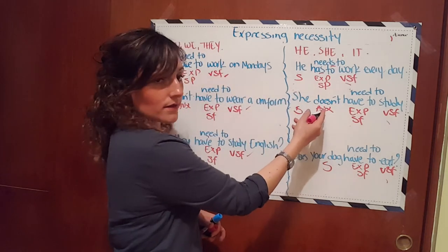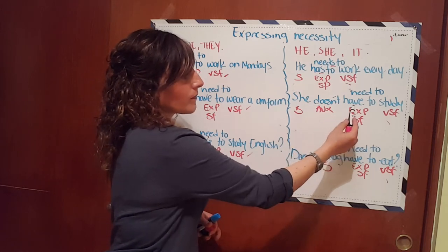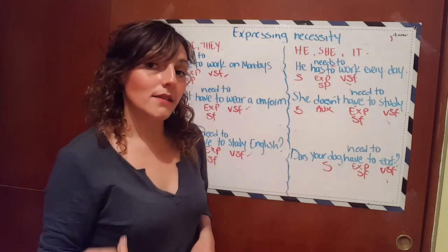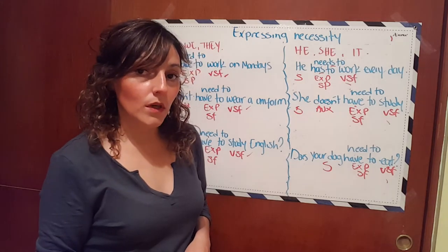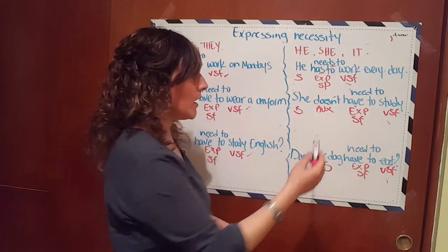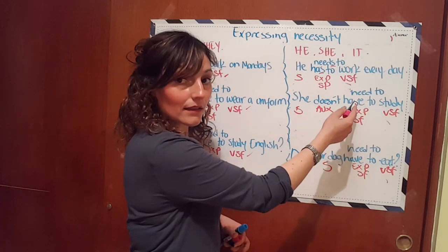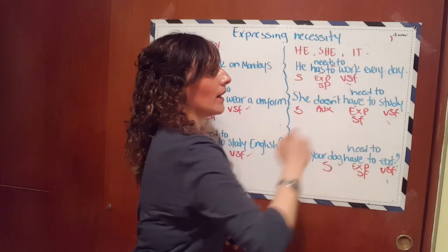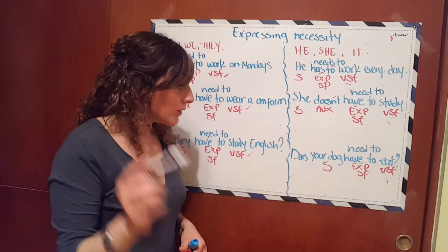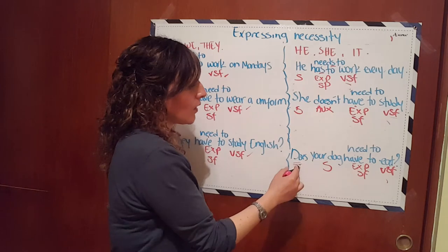For the negative form with he, she, it in present, the auxiliary is 'doesn't.' When you use the auxiliary, the expression changes — it is not correct to say 'she doesn't has to' or 'she doesn't needs to.' The S after your expression is not necessary because you are already using the auxiliary. The correct form is 'she doesn't have to' or 'she doesn't need to,' and then your verb in simple form.